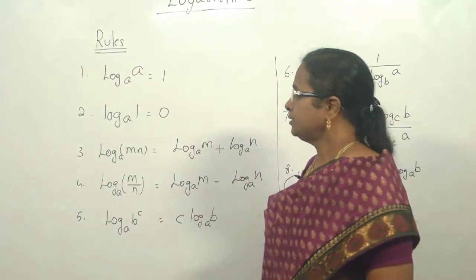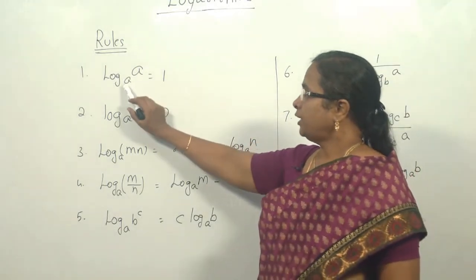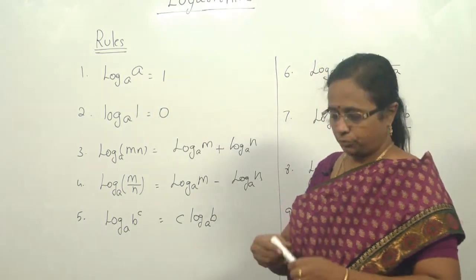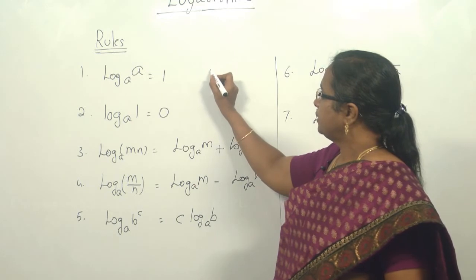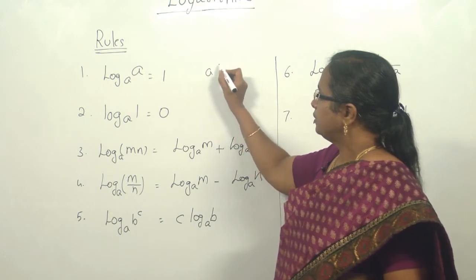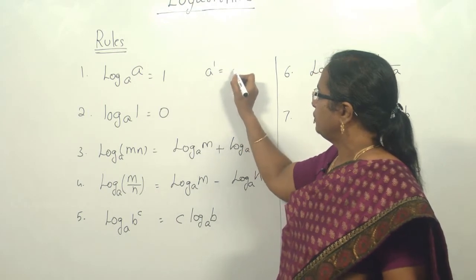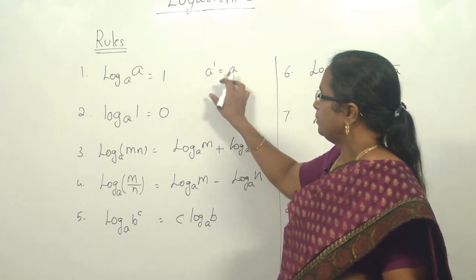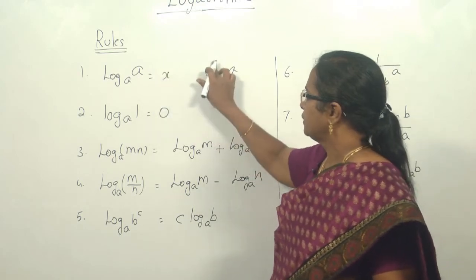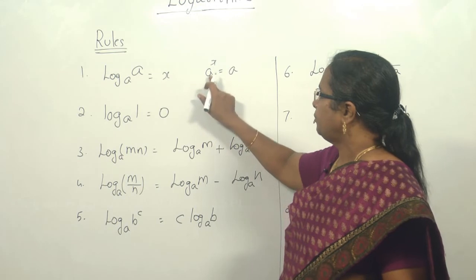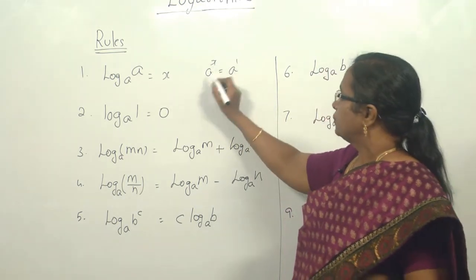Certain rules must be followed when solving logarithm problems. Rule 1: log of a to the base a equals 1. The explanation is that a to the power 1 equals a, so the power must be 1. If a to the power x equals a, then obviously x equals 1.